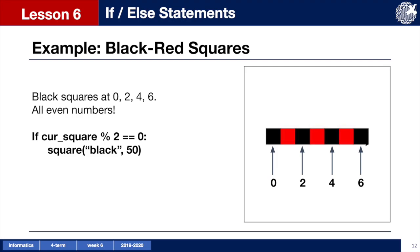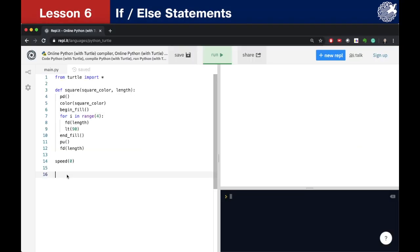The modulus operator can help us determine if a number is even because any even number divided by 2 will have a remainder of 0. So our condition will be checking if a variable that counts the current square divided by 2 has a remainder. If the remainder is 0, it means my current square is even and therefore should be painted in black color. Let's go to the code editor to write this program.